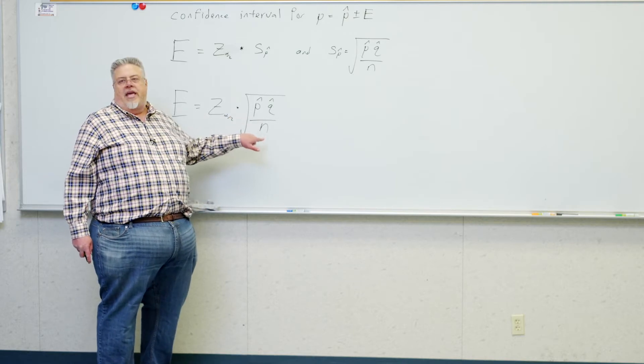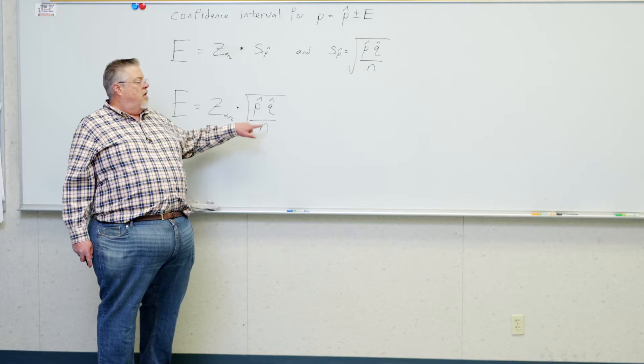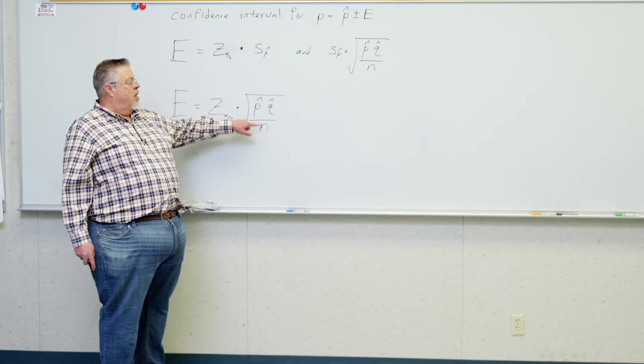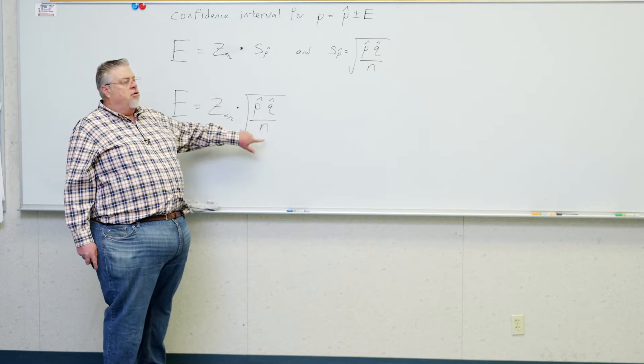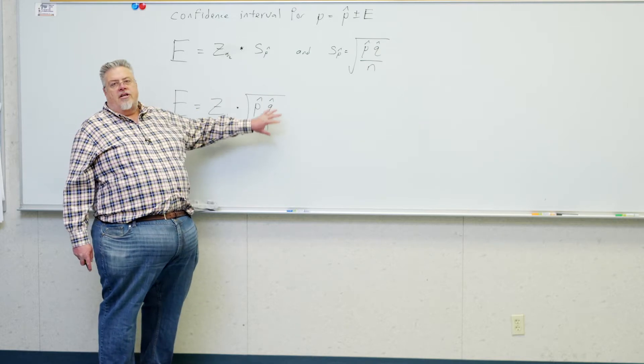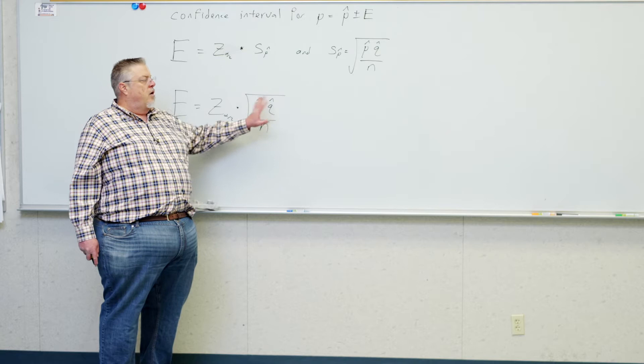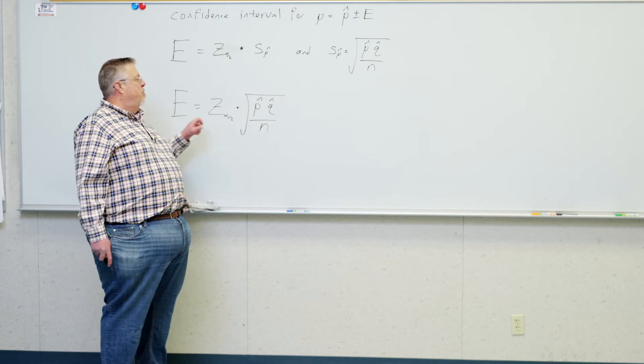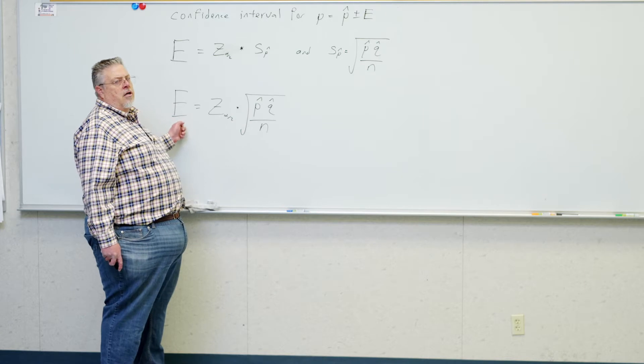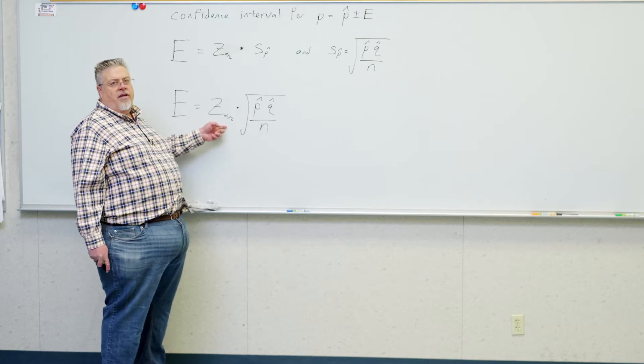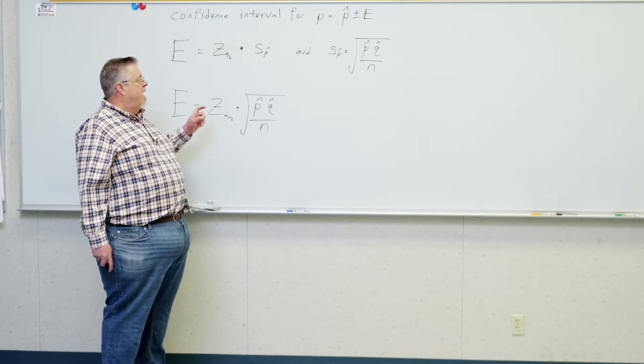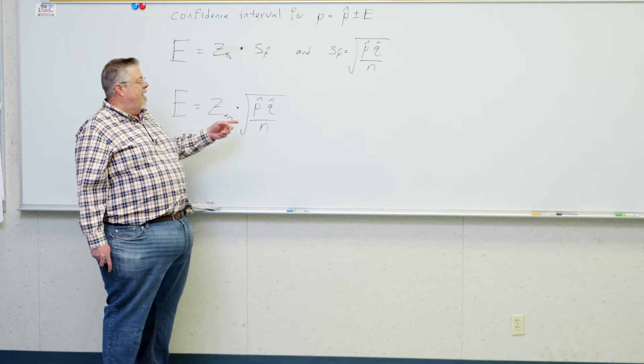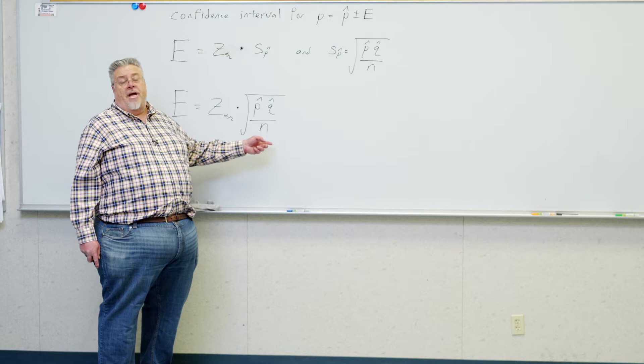So, if I keep making N bigger, if N gets bigger, this fraction gets smaller because N is in the denominator. So, if N gets bigger, this fraction gets smaller. Square root still smaller. That's going to make the error smaller. So, without changing my level of confidence, I can make my error smaller by making N bigger.